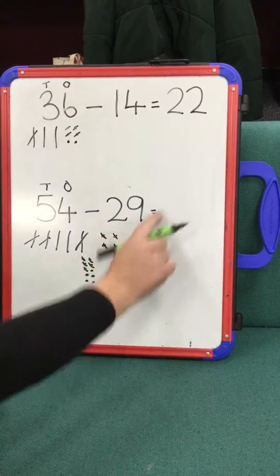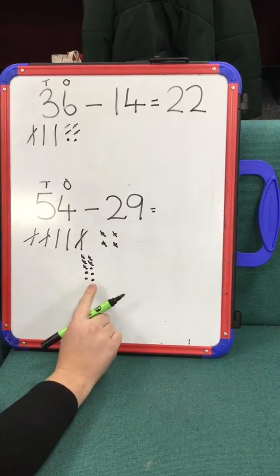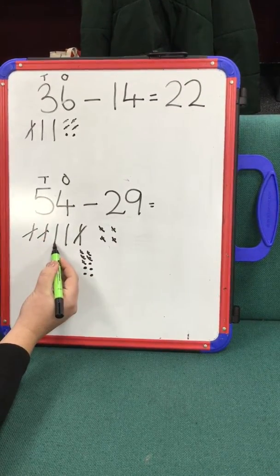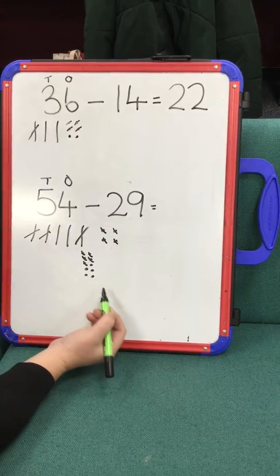I've taken away that whole 29. And then you count how many, again, you've got left. So 10, 20, 21, 22, 23, 24, 25.